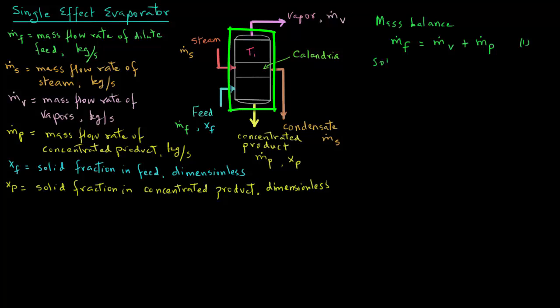When we look at the solids balance, we note that xf is the solid fraction in the feed and it is dimensionless. So xf times M.f represents the amount of solids in the feed. That equals xp, the solid fraction in the concentrated product (dimensionless), times the mass flow rate of the product M.p. This represents the amount of solids present in the concentrated product stream — that is our equation 2.